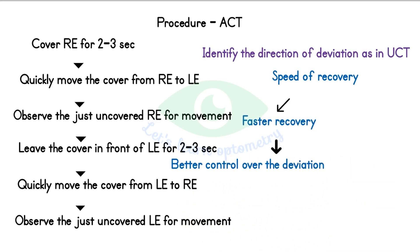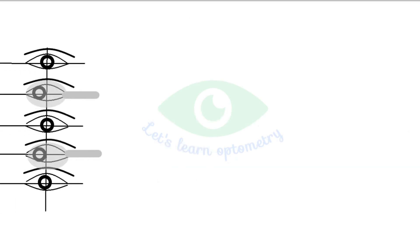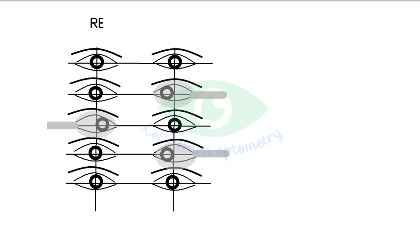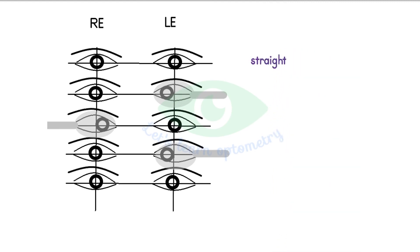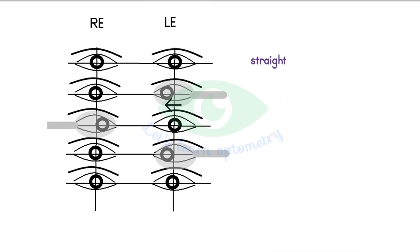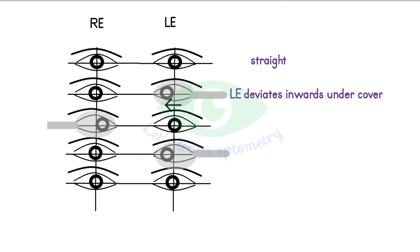As in the uncover test, we also need to observe the speed of the recovery movement. Faster recovery indicates that the patient has better control over the deviation and has good visual acuity. Slower recovery indicates poor control and poor visual acuity. In this example, both eyes are aligned. While covering the left eye it deviates inwards under the cover. Now we quickly move the cover from the left eye to the right eye.